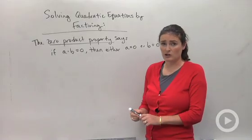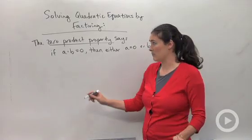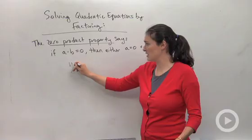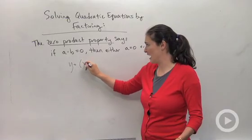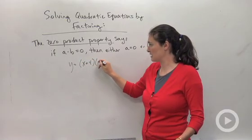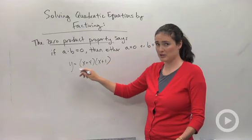It's the same idea with quadratic equations. Let me show you what I mean. Let's just say I have the equation that looks like this, y equals x plus 4 times x plus 1. I factored it, that was my factored form.